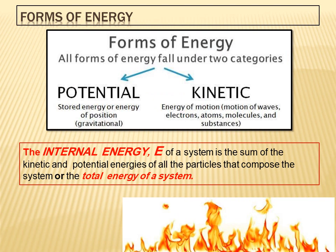Forms of energy: all forms of energy fall under two categories — potential and kinetic. Potential energy is the energy of position, including gravitational. Kinetic energy is the energy of motion — motion of waves, electrons, atoms, molecules, and substances.